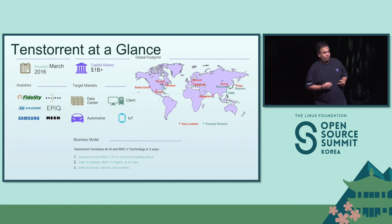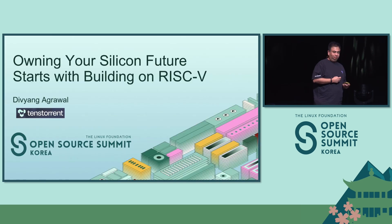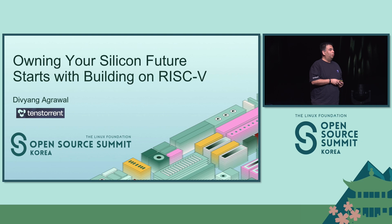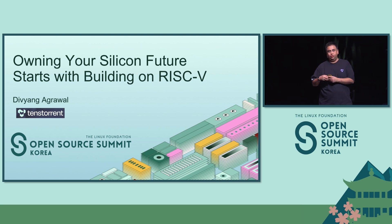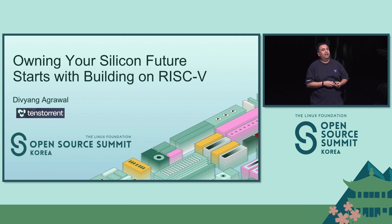One of the things I want to spend time talking about is, as we build our hardware, software, and systems, a key thing keeps coming over and over. In order for AI to be more prevalent, it has to be built on open systems. It has to be built on not just open software, but open hardware, and that's fundamentally why we ended up with RISC-V.